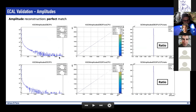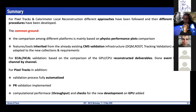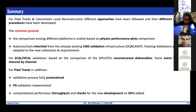The plots show basically what's happening event by event: you can see no difference — the plots are completely overlapping and the ratio is always one. This is for example the amplitude, and this is the number of RecHits produced. In conclusion, two different approaches have been followed for the calorimeter and for pixel tracks. The common ground is that the main comparison is done using physics performance plots, inheriting features from the CMS validation infrastructure.